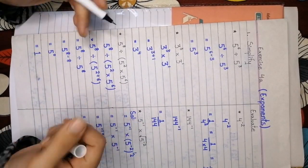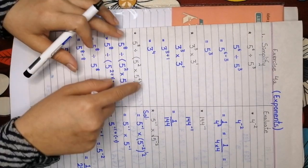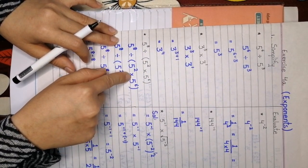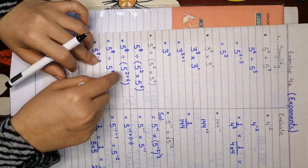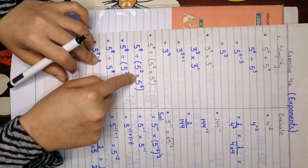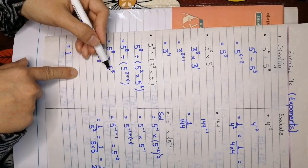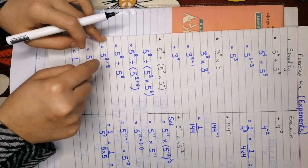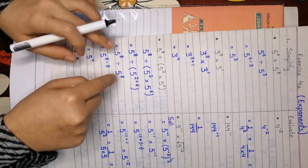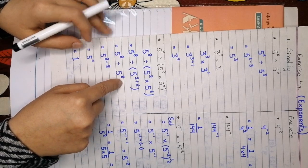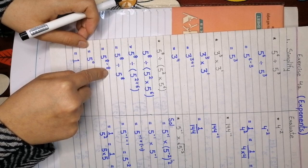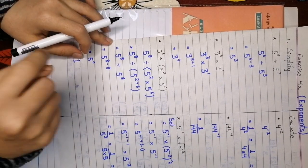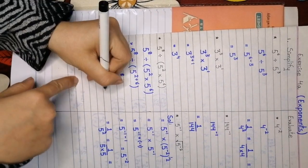Now look here — we have brackets also, so according to BODMAS rule you have to solve the bracket first. Inside the bracket we have the same base and a multiplication sign, so we will add the powers. When we add them we get 8. Now, done with the bracket — we are left with a division sign and same base, so we subtract the powers. 8 minus 8 equals 0.